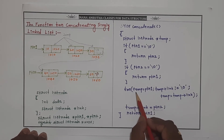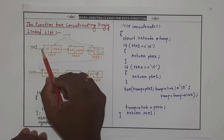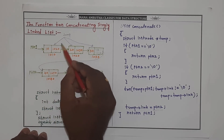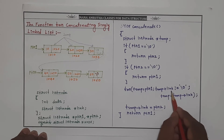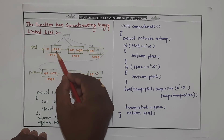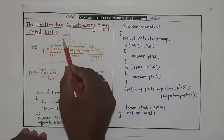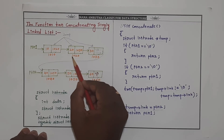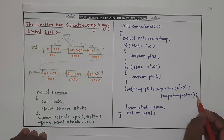Initially, we assign temp equal to PTR1. Where PTR1 is pointing — now temp is also pointing to the same node, that is 1010. We check the condition: temp of link is not equal to null — it is true. So we execute temp equal to temp of link. Now temp is pointing to the next node, that is 1020. The for loop repeats.